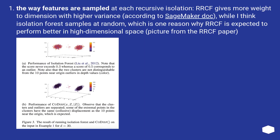The way features are sampled at each recursive isolation: RRCF gives more weight to dimensions with higher variance, according to SageMaker documentation, while Isolation Forest samples at random. This is one reason why RRCF is expected to perform better in high-dimensional space, as shown in a picture from the RRCF paper.